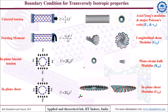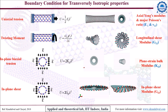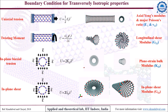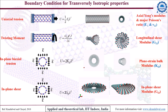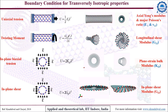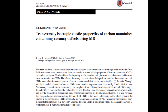A nanotube was subjected to in-plane pure shear at small strains, such that its circular cross-sectional shape deforms into an elliptical shape. This is achieved by constraining the two ends of the nanotube axially. Then, following similar steps as adopted in the case of plane-strain bulk modulus, the in-plane shear modulus can be determined using the given relation.